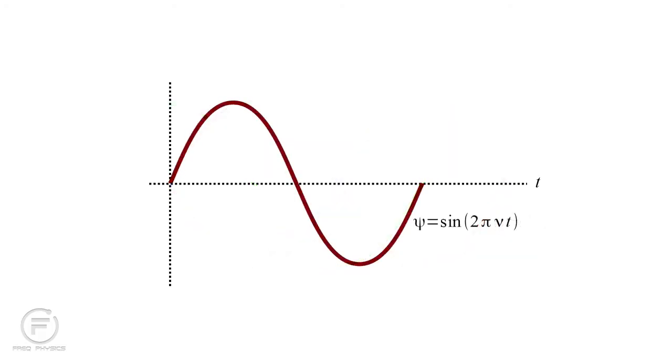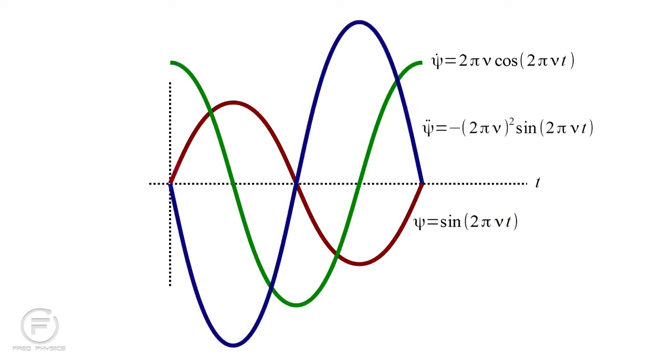Now imagine we make our sine wave oscillate faster. We write the field as sine two pi nu t, where nu is the frequency of oscillation. Since this compresses our curve horizontally, the slopes will increase, and our slope function will have a larger amplitude. It's two pi nu times the cosine of two pi nu t. Likewise, the curvature has an even larger amplitude. It's minus quantity two pi nu squared times sine of two pi nu t. This is minus quantity two pi nu squared times the field itself.